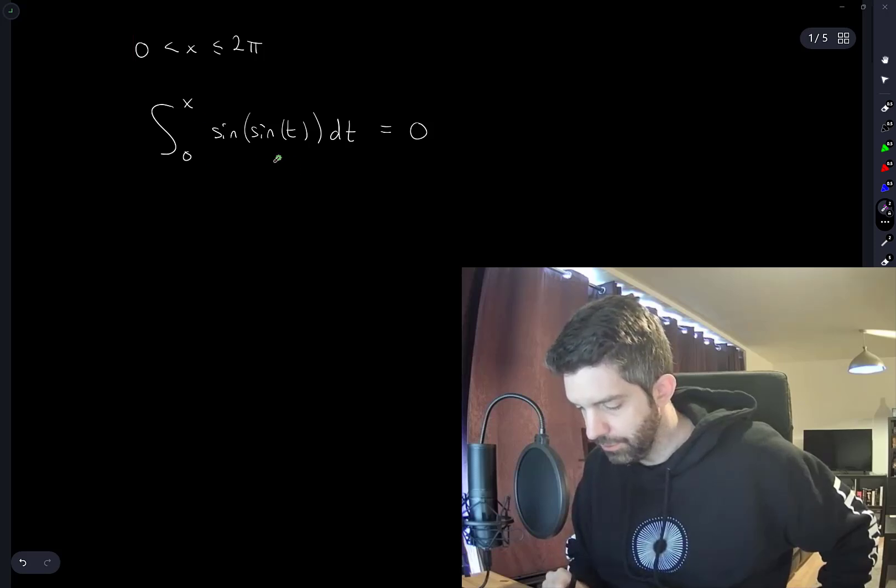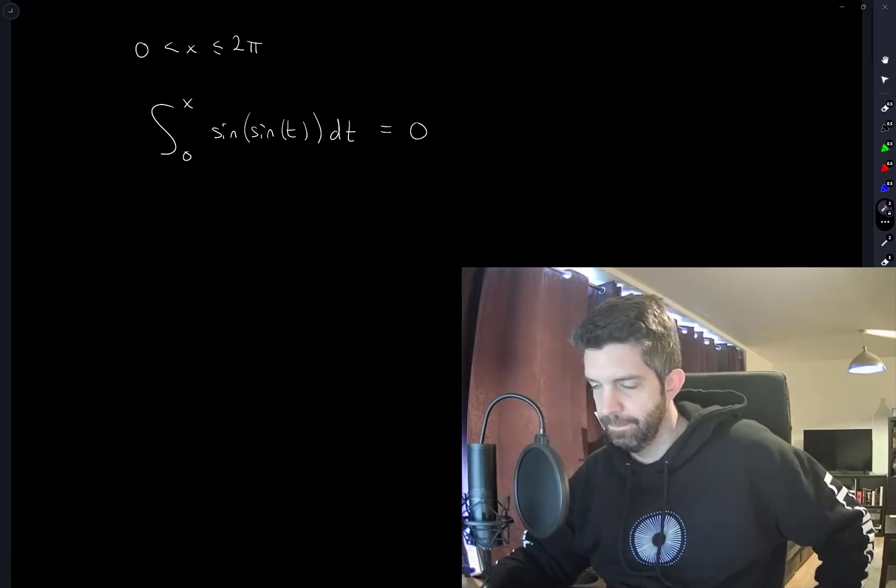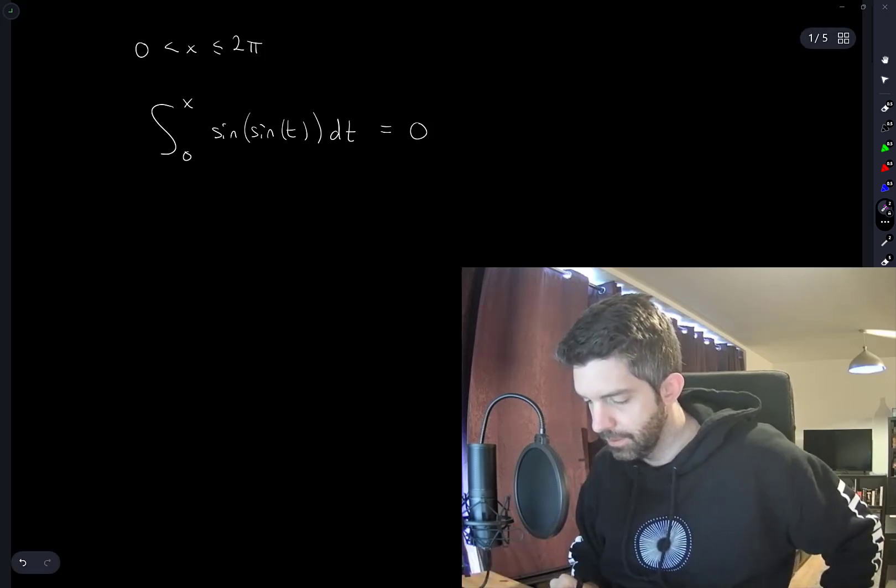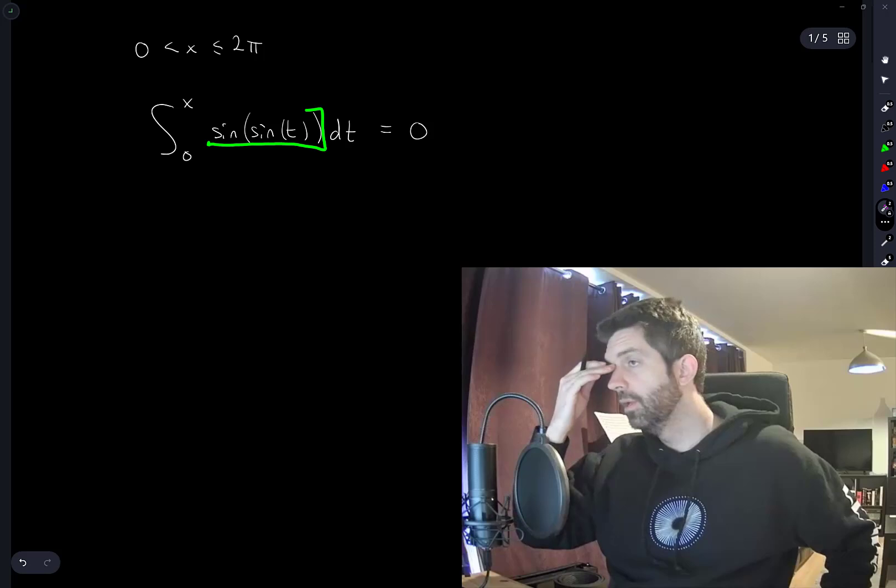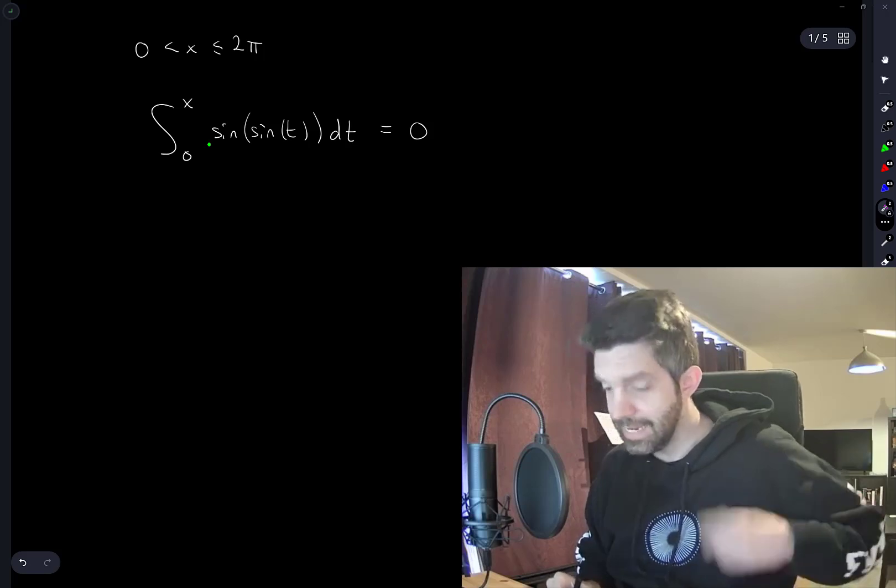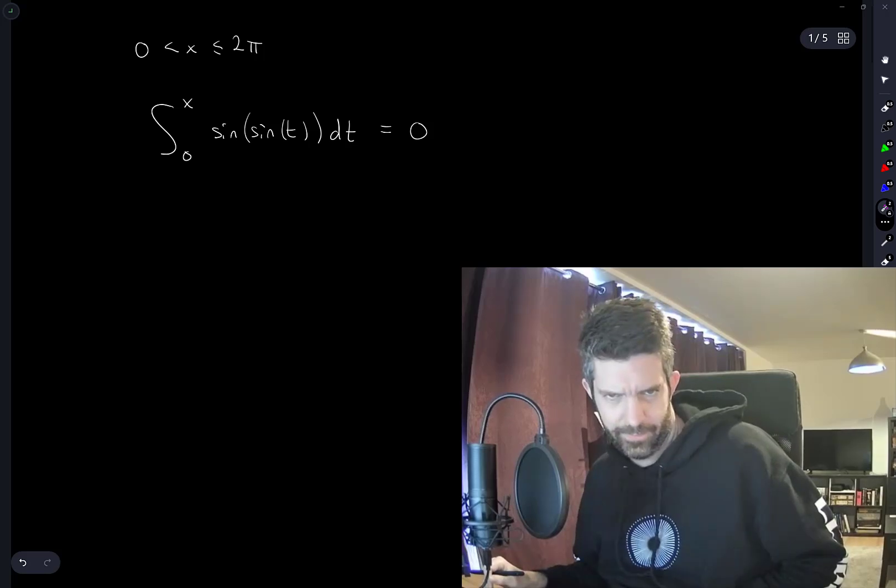And when x increases away from 0, this thing starts to increase. This is an increasing function until x hits pi. No, until x hits pi over 2. And then it decreases again. Sorry, t. As t goes... Is the answer just 0?